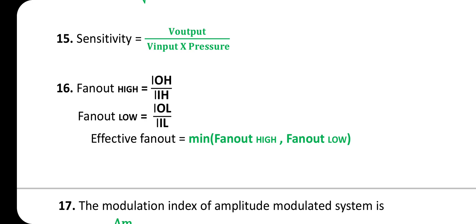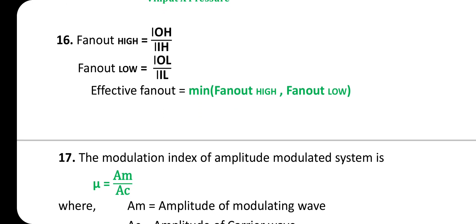Fan out (high) = I_OH / I_IH. Fan out (low) = I_OL / I_IL. Effective fan out = minimum of (fan out high, fan out low).